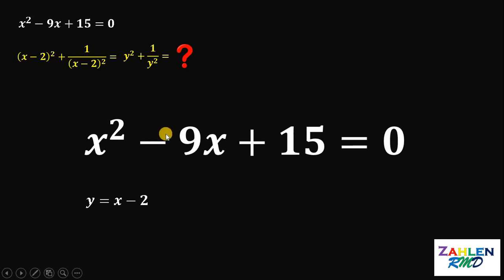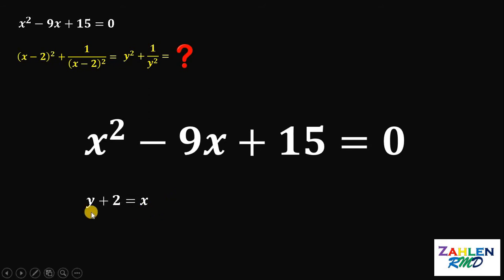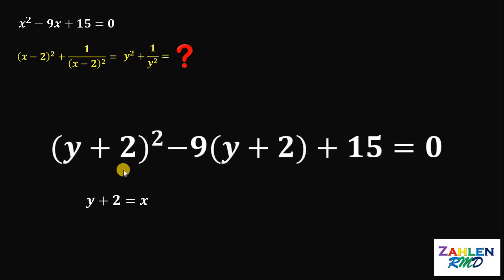Now to do that, from our substitution y equals x minus 2, let's solve for the value of x. Add 2 on both sides and we get that x must be equal to y plus 2. Therefore, let's replace all x in this equation by y plus 2. If we do that, we get y plus 2 quantity squared minus 9 times y plus 2 plus 15 equals 0.